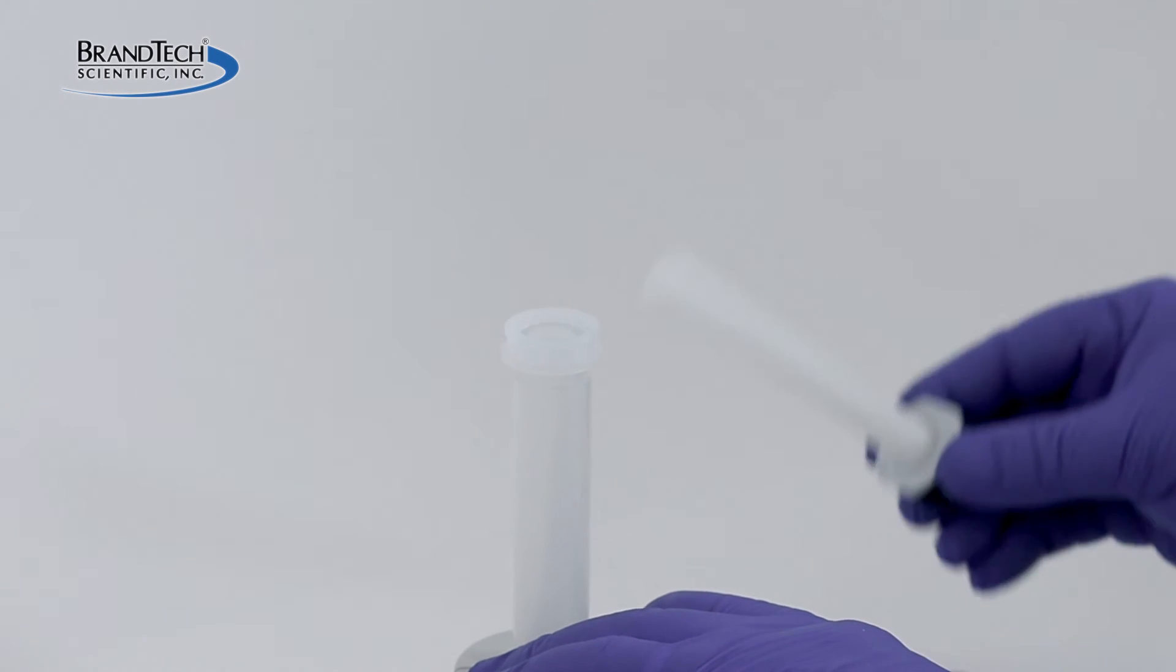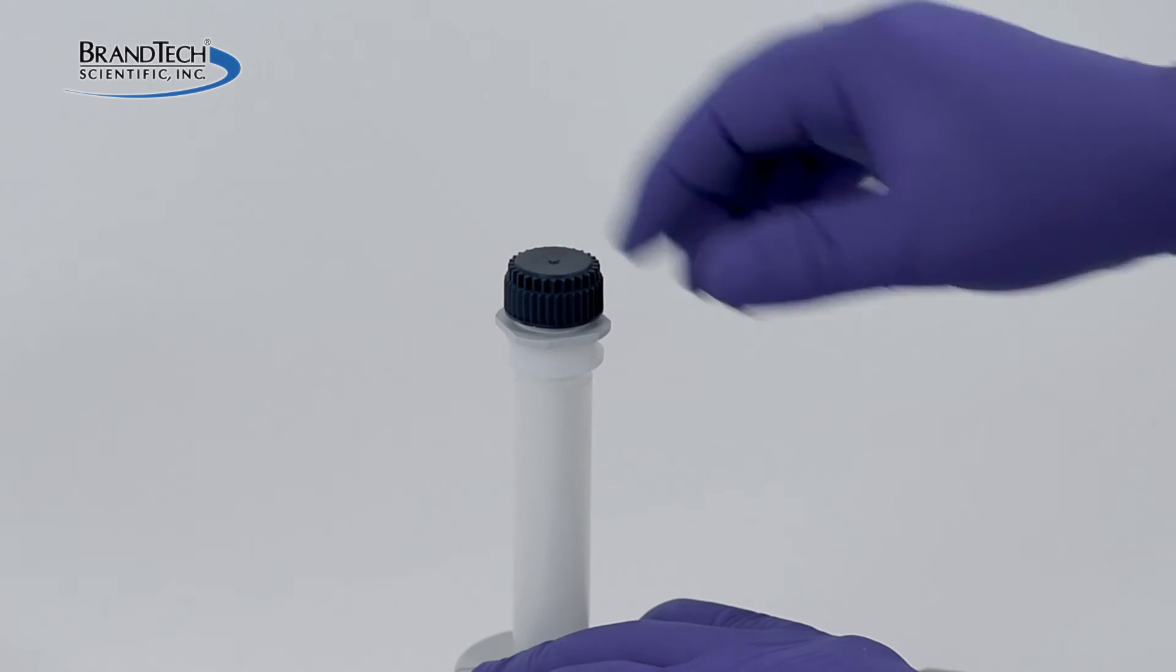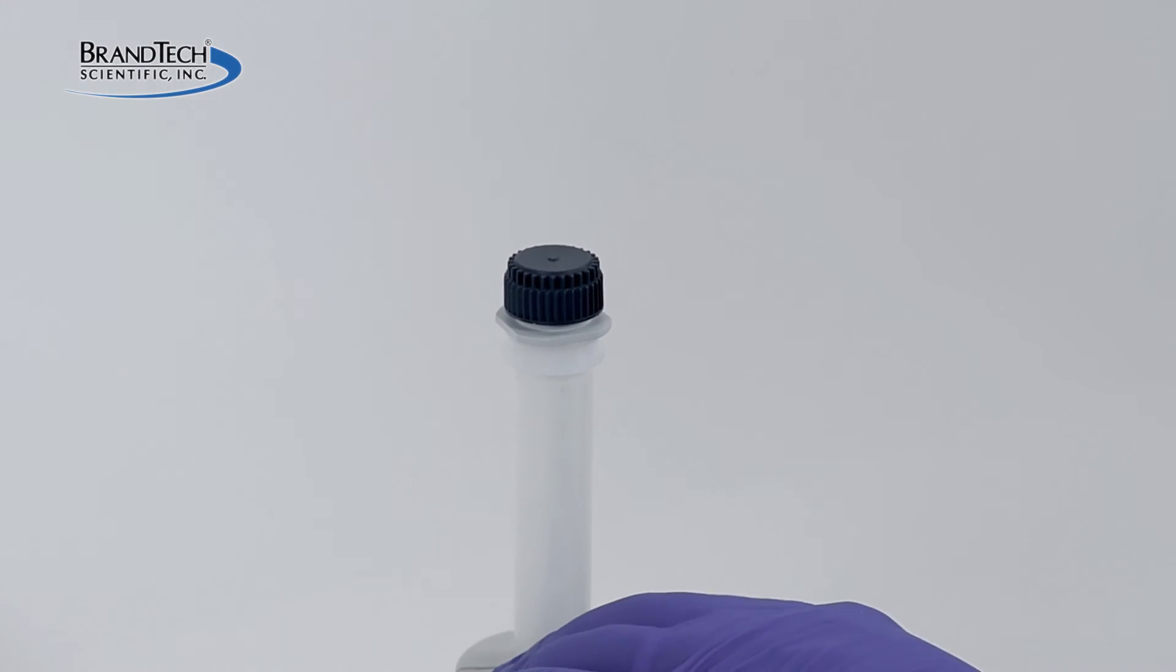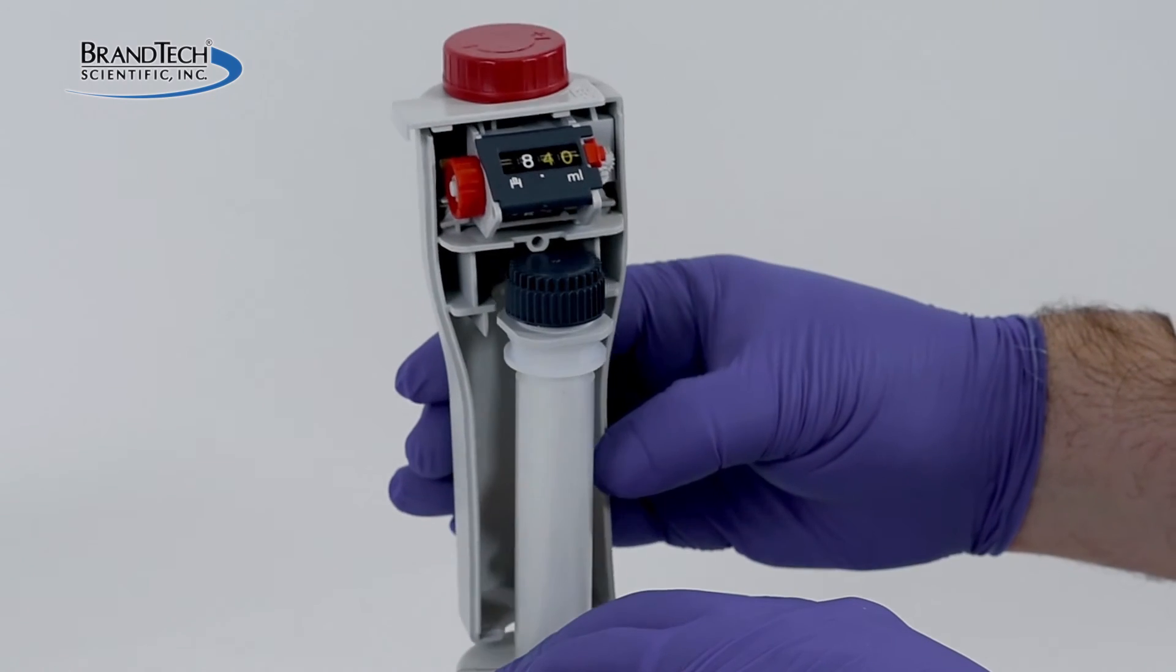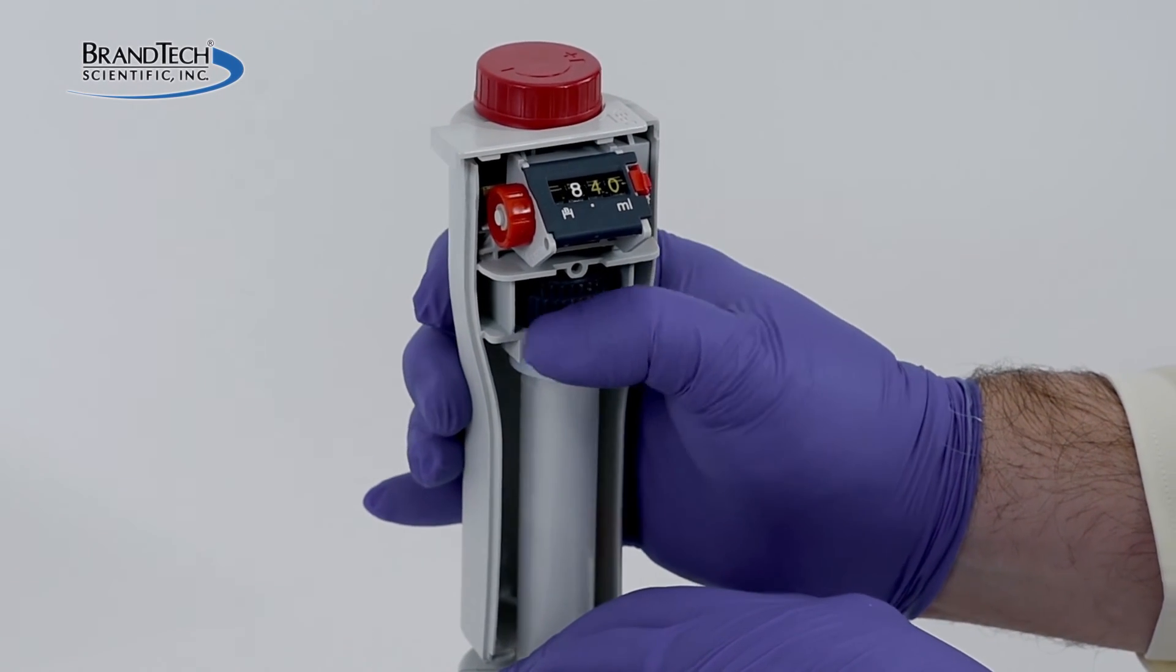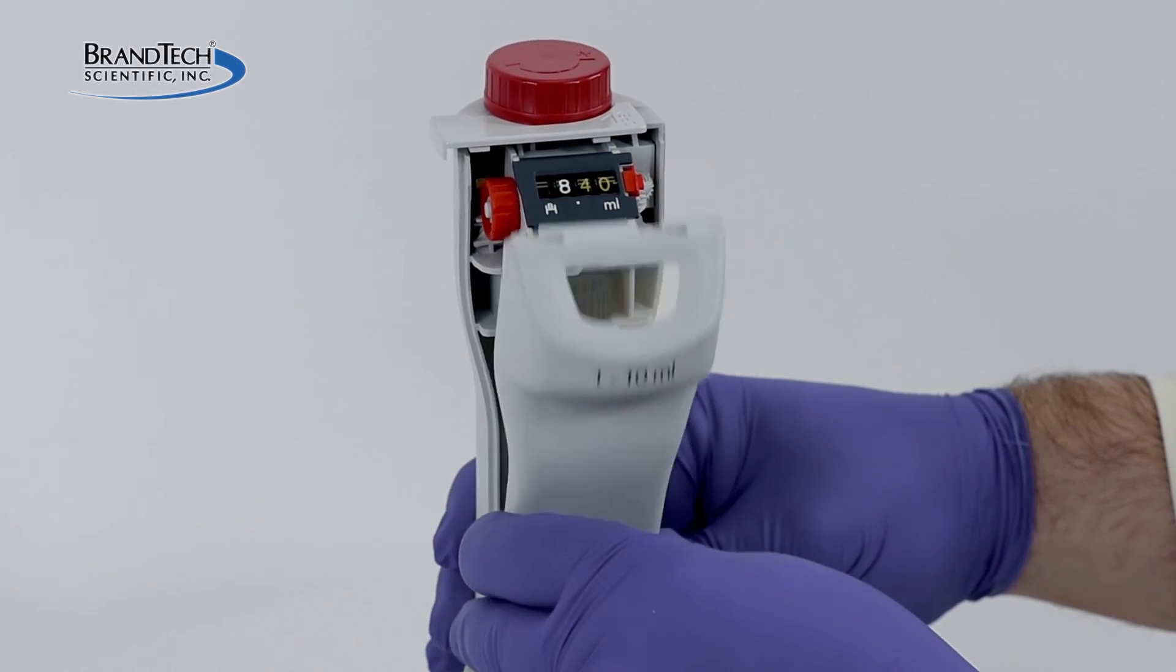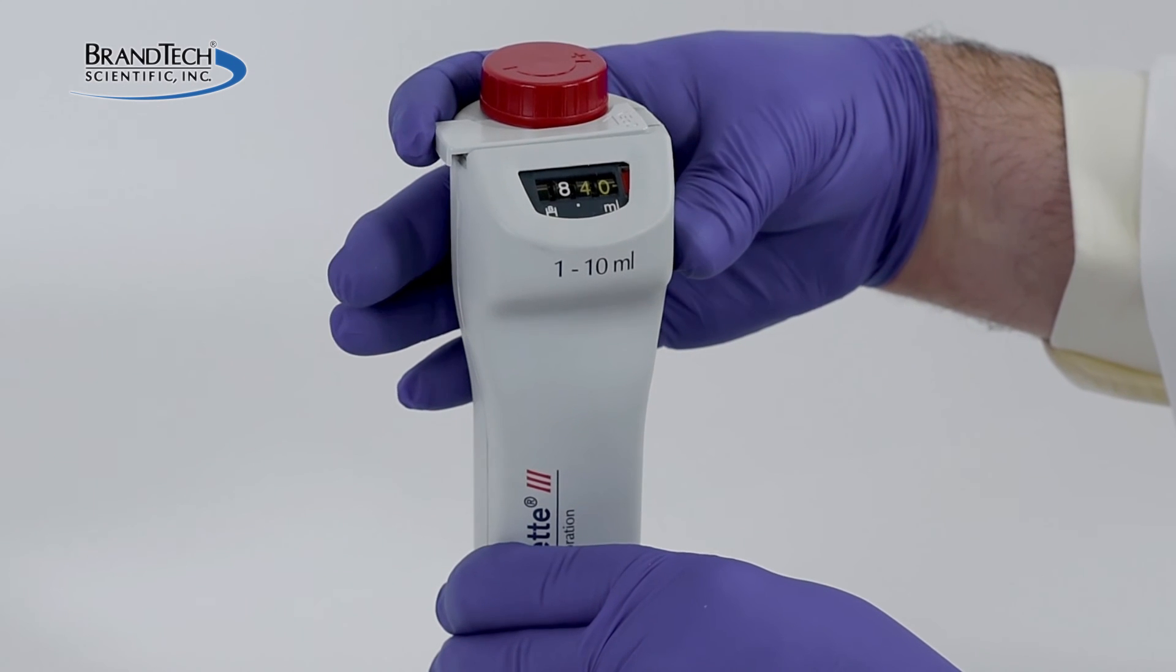For a digital easy calibration model, insert the piston into the cylinder. Replace the rear housing and tighten the cap with your fingers. Use of the valve tool is not necessary. Replace the front of the housing and slide the tab to secure.